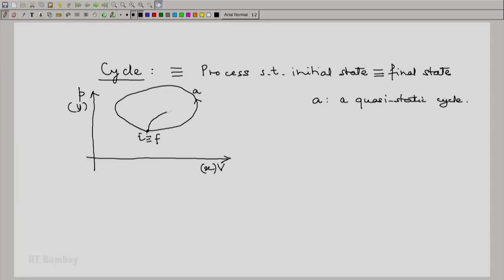I can have another quasi-static cycle, let me call it B. B is another quasi-static cycle. So, if you consider A, throughout the process the state was known because it was a state of equilibrium.